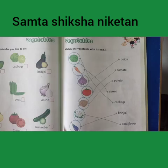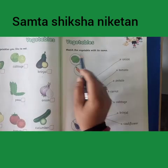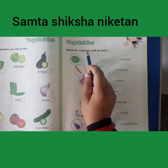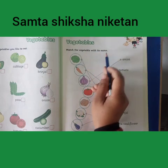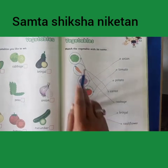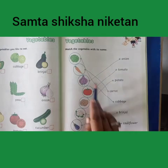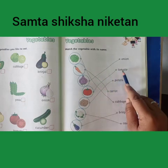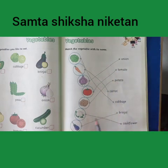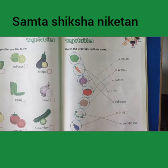Cucumber. Your next homework is vegetables — match the vegetables with its name. Aapko yahan kuch vegetables di gayi hai, unke naam ke saath unko match karna hai. Here is onion, tomato, potato, cauliflower, brinjal. Okay students, do it in your book. Okay, goodbye, bye.